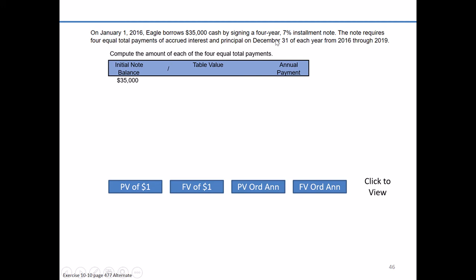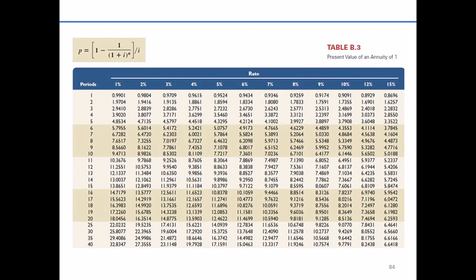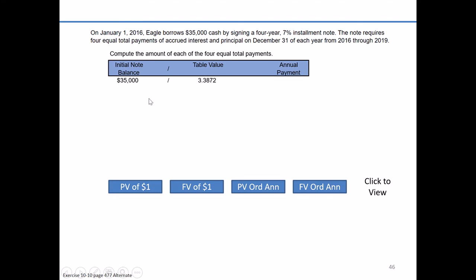It's four years at a seven percent interest rate — that's going to be important. Looking at the present value of an ordinary annuity table, I'll find the row corresponding to four periods and the column for 7%. At the intersection of 7% and four years, we have a factor of 3.3872. Taking $35,000 divided by 3.3872, we get an annual payment of $10,333 — the amount we'll pay at the end of each of the next four years.